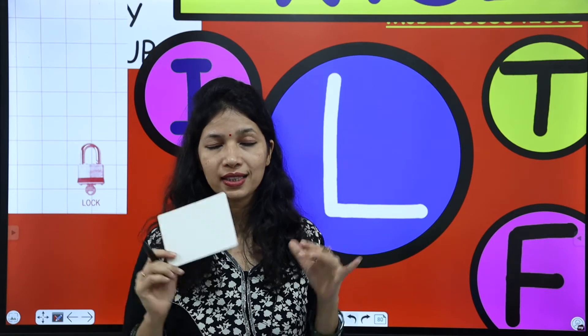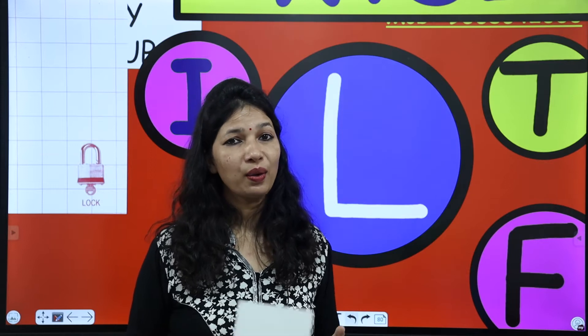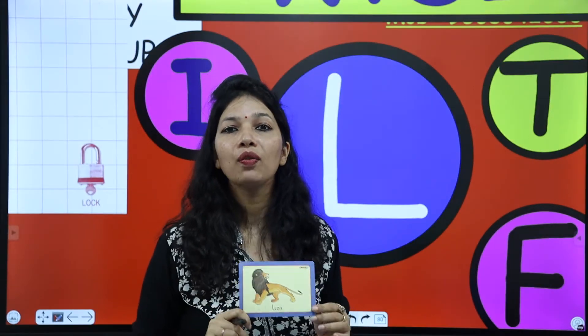Next is an animal — the king of the forest. Jungle ka king hota hai, woh bhi letter L se start hota hai. Lion. Lion starts with letter L. This is lion. Lion is the king of the forest.